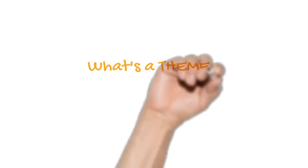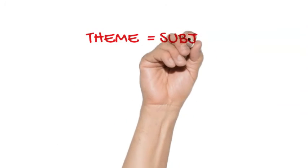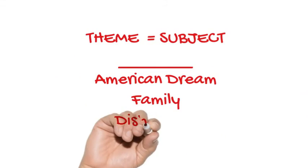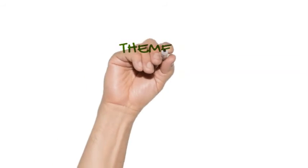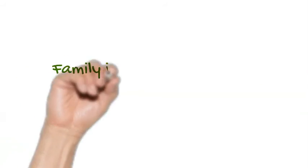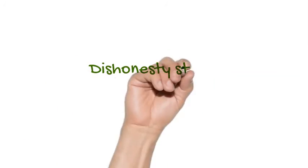Let's start with a definition. What is a theme? It's the author's interpretation of a subject. Many times people say that a theme is simply a subject like the American dream or family or dishonesty, but a true theme is the author's take on that subject. The American dream is a lie, or family is the most important community we have, or dishonesty starts when you deceive yourself.